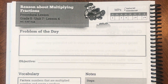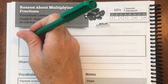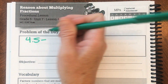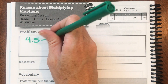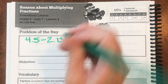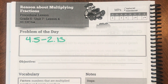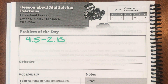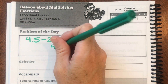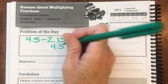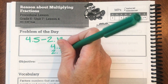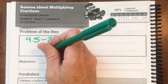My first problem is 4 and 5 tenths take away 2 and 13 hundredths. Just like when I add decimals, when I subtract decimals, the most important thing to do is line up my place values, which includes lining up my decimal. So I have 4 and 5 tenths take away 2 and 13 hundredths.